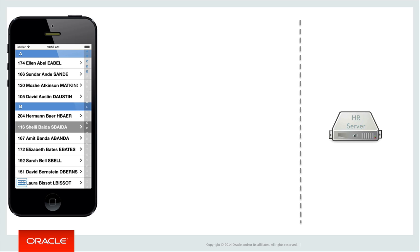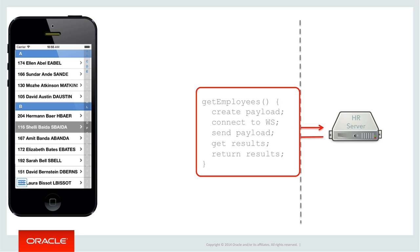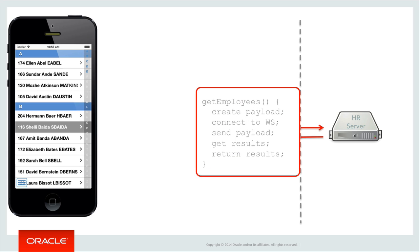Given we know we want a screen with a list of employees and the data is available remotely, how would a programmer solve this given what we know about MAF already? To break the problem down, we first need a Java bean to invoke the remote web service. Maybe a method called getEmployees could assemble the empty request payload, connect to the remote web service, send the payload, receive a result, and then return the result payload to whoever called this method.